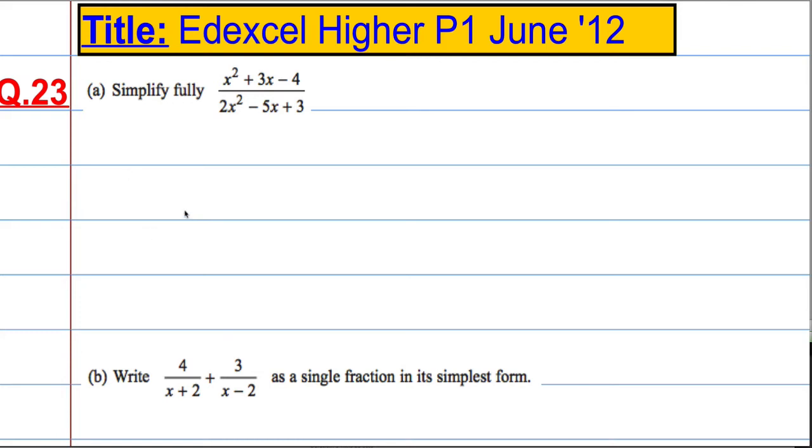Okay, so question 23 is a little bit of algebra. Part A, we're asked to simplify fully. And we've got x squared plus 3x minus 4 over 2x squared minus 5x plus 3.